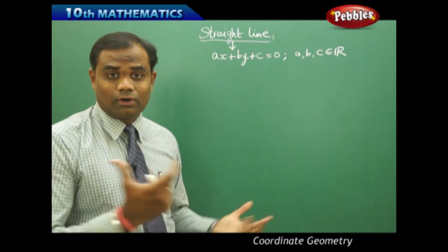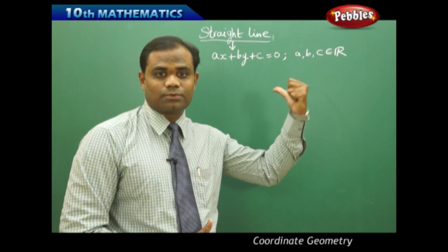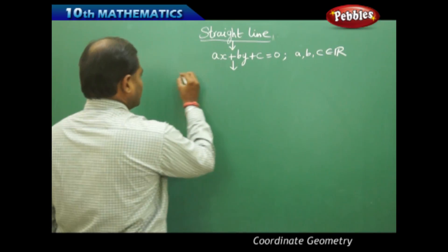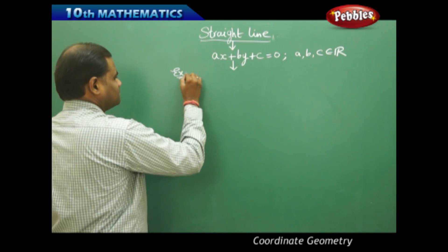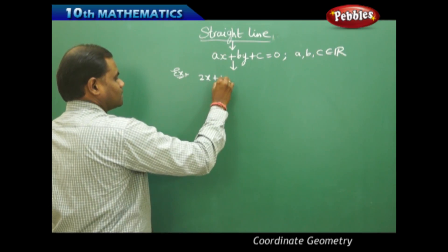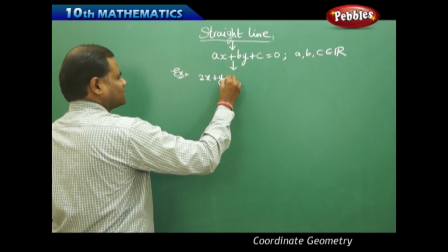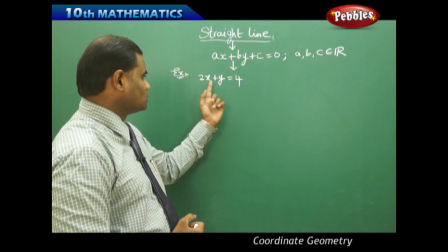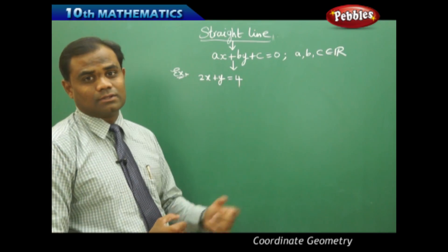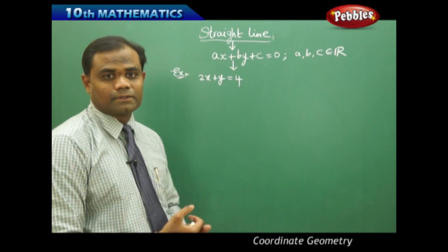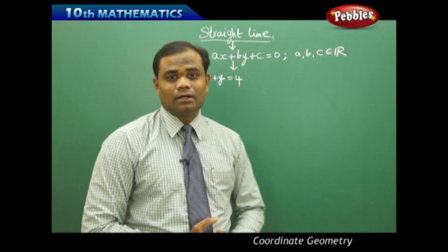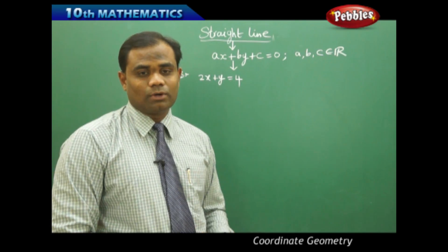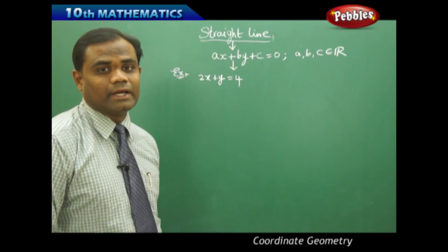How does the general form ax plus by plus c equal to zero look on a real xy coordinate system? For example, take the straight line 2x plus y equals 4. This is a straight line with A equal to 2, B equal to 1, and C equal to minus 4 when brought to the left. How does this linear equation look on a real xy coordinate system? Let's plot the points and see.